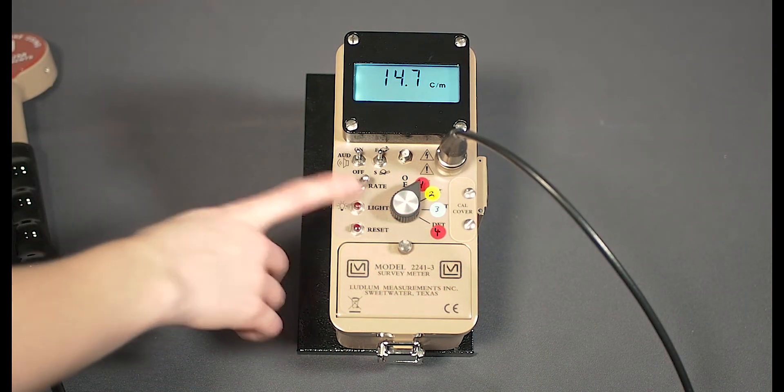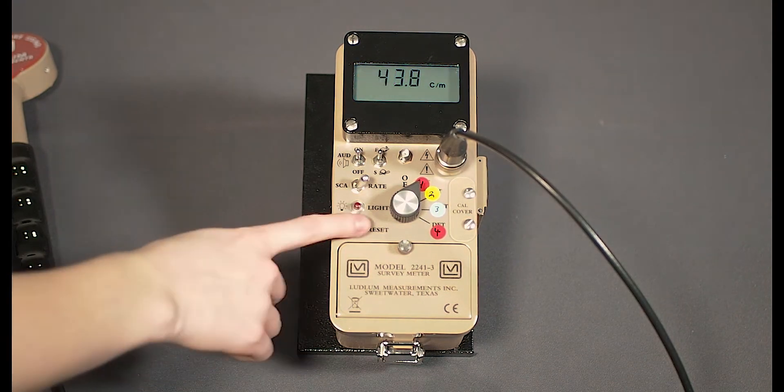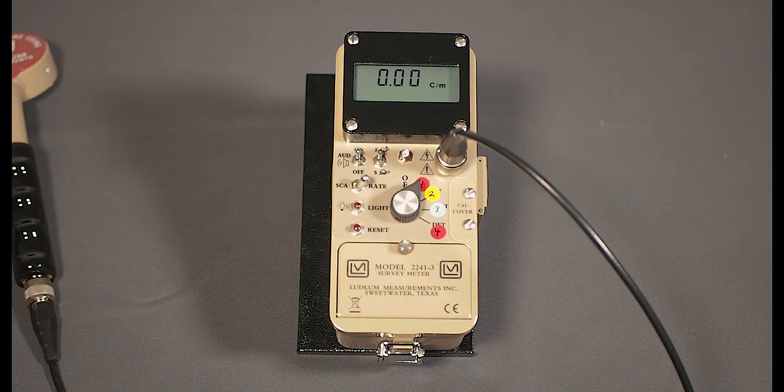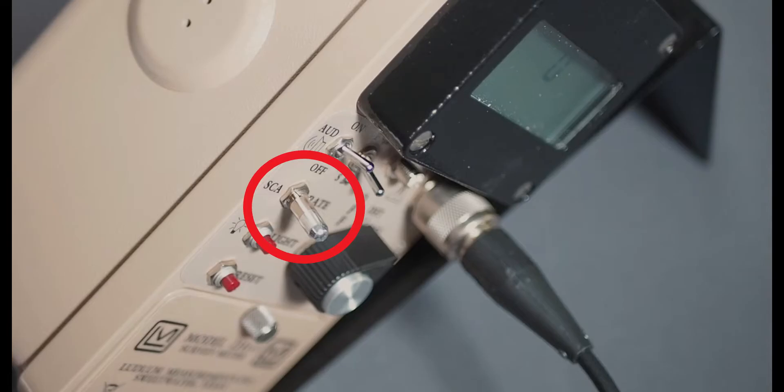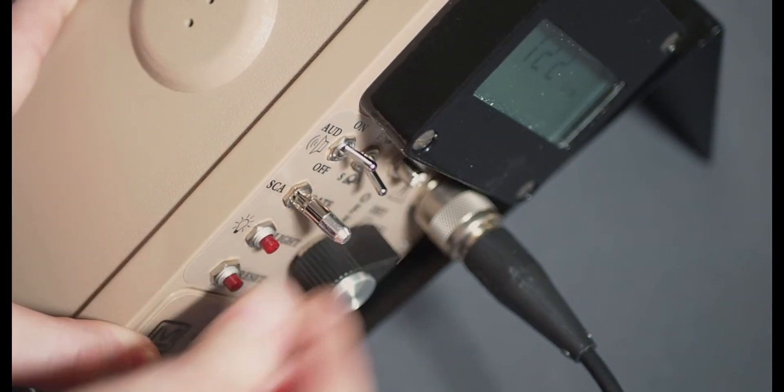The light button will illuminate the meter display for a short period of time. A reset button drives the display back to zero. There is also a protected toggle switch to change from rate mode to scalar mode and vice versa. This switch has to be pulled up before it can be toggled.